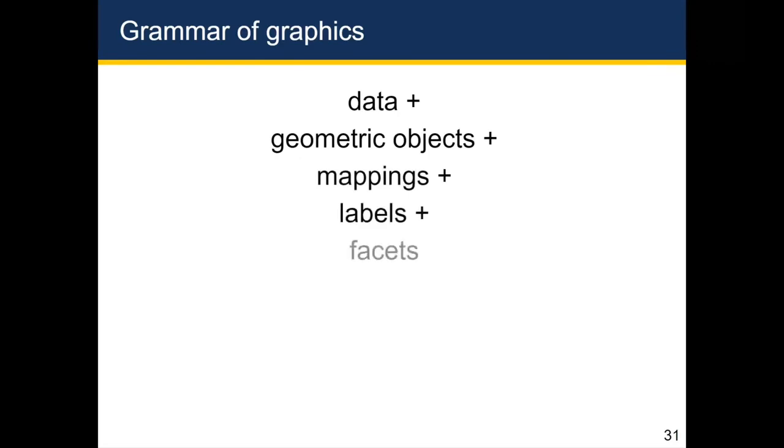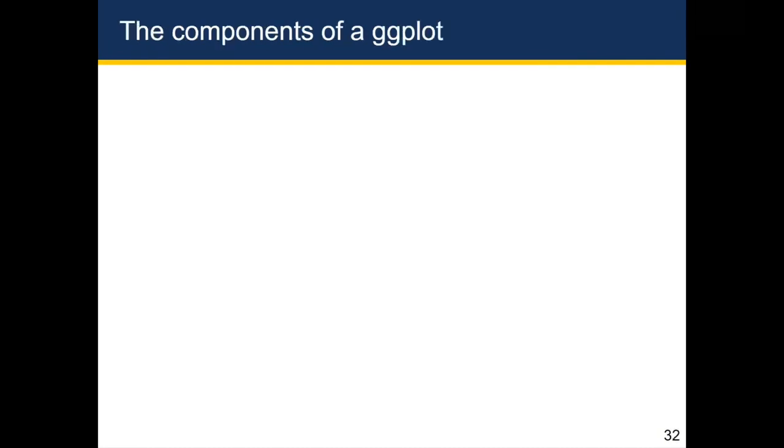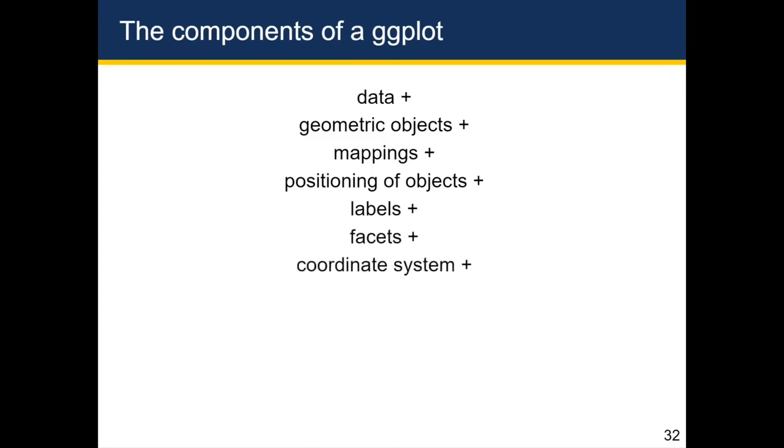So just to refresh, what Leland Wilkinson was saying was that if you add up data, geometric objects, mappings, labels, and facets, you end up with a plot. GGplot actually takes inspiration from that and just builds on it a little bit more. So in ggplot, you start with data, you add geometric objects, you add mappings, you can optionally tell it how to position certain objects. You can add labels, you can add facets, and then you can add a coordinate system and scales and themes.